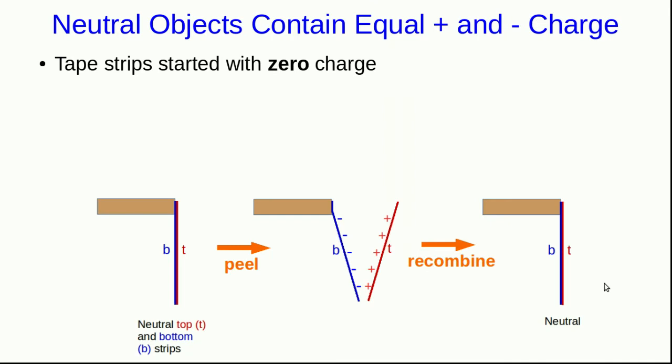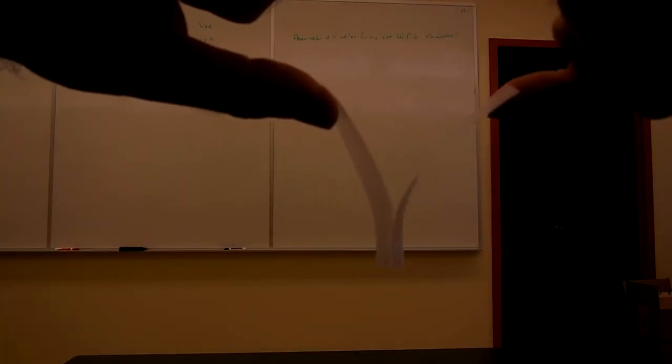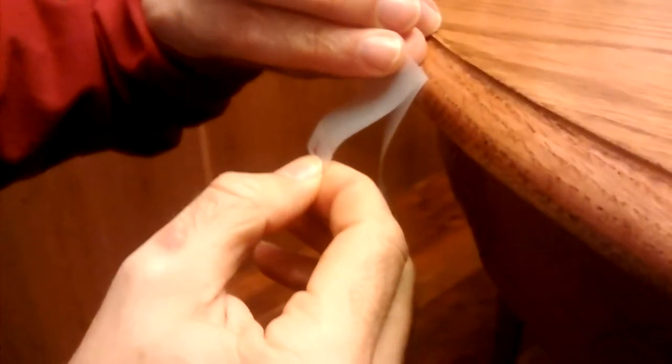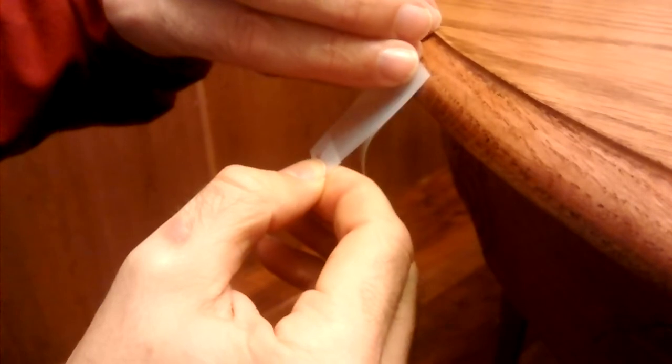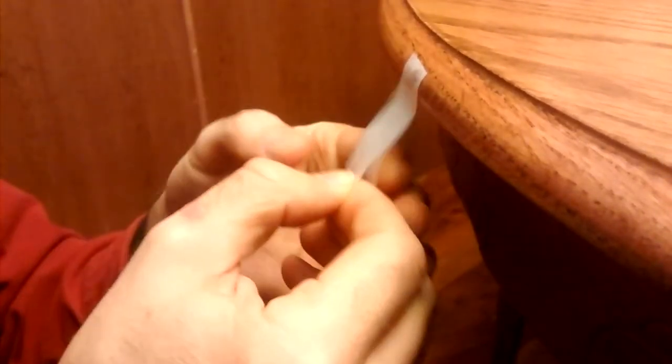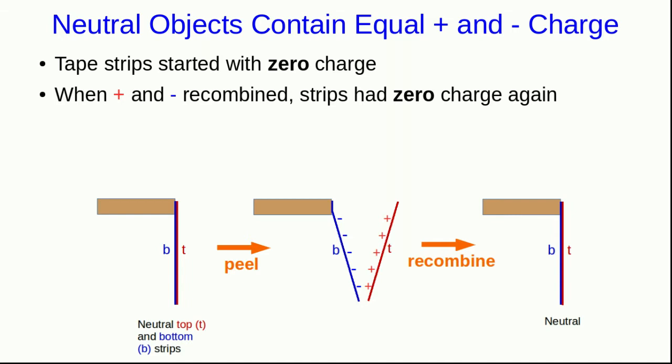Let's think a little more carefully about what happened when we took our bottom and top strips of tape, separated them, found that they had opposite charge, and then stuck them back together again and found that they were neutral. This suggests something. The tape strips started with zero charge and after we had separated them and recombined them they had zero charge again.